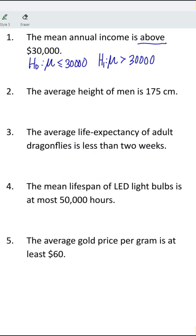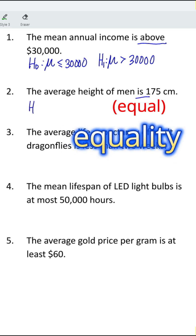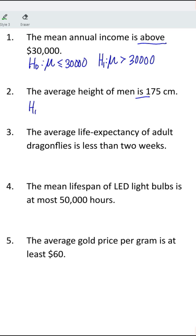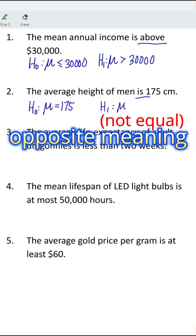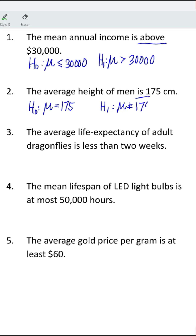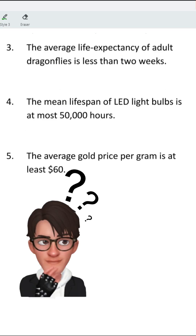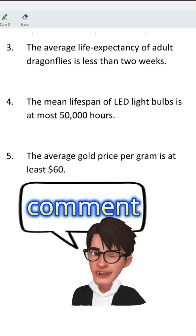Example two: 'the average height of men is' — since this has the meaning of equality, we write it for the null hypothesis as mean equal to 175, while the alternative hypothesis has mean not equal to 175. How about examples three, four, and five? Let's continue.